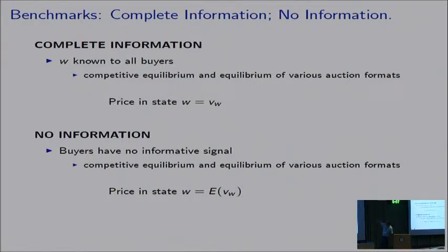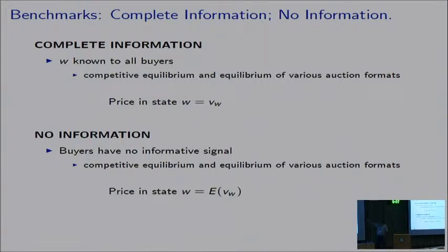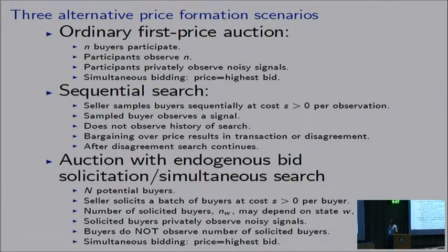Let me talk about two benchmarks. Under complete information — when W is known to all buyers — competitive equilibrium and equilibrium of various auction formats give a price in state W equal to V_W. When buyers have no informative signal at all, competitive equilibrium and auction equilibria give a price equal to the expected value. These are the benchmarks. Now I'll talk about three alternative price formation scenarios.